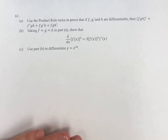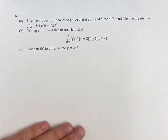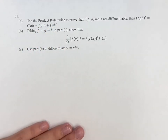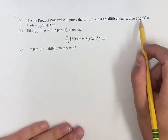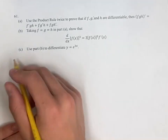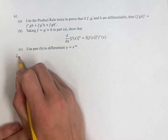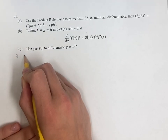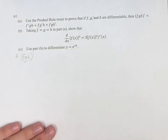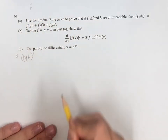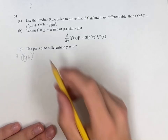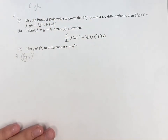Hello and welcome back to another video. In this problem, we are looking to use the product rule twice to prove that the derivative of fgh is equal to this expression. So just writing it out right here, what we're going to do is say f is going to be one of our functions in the product rule, and gh is going to be the other.